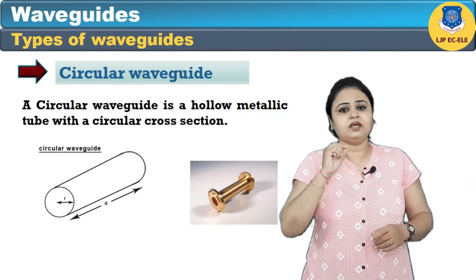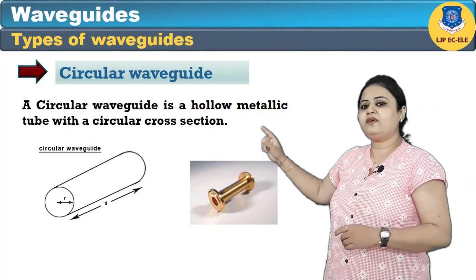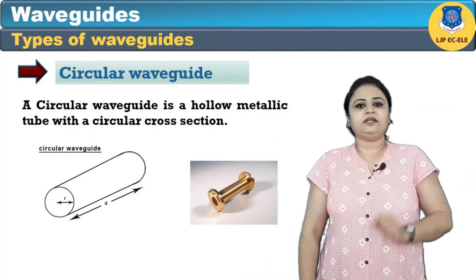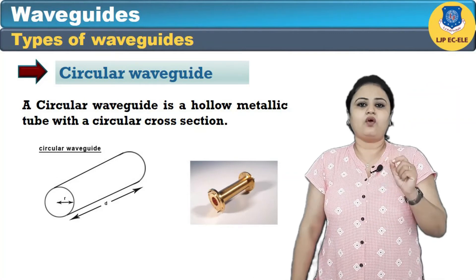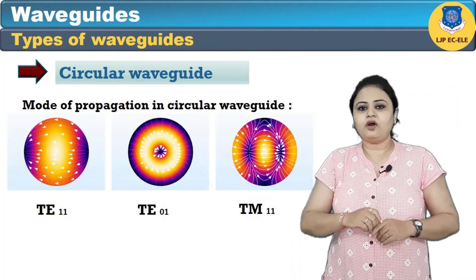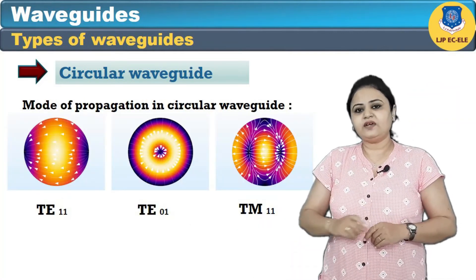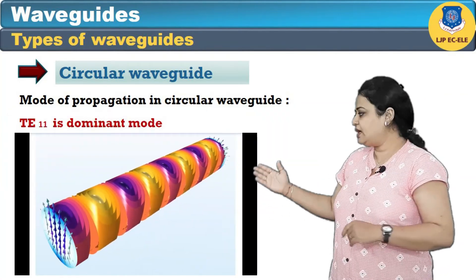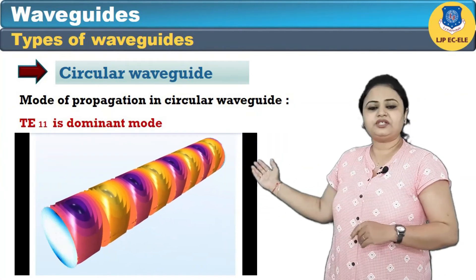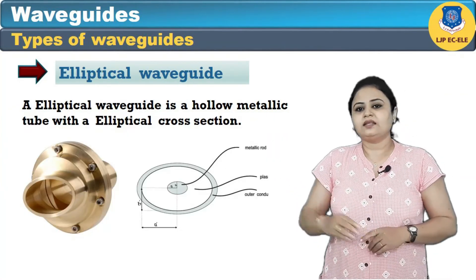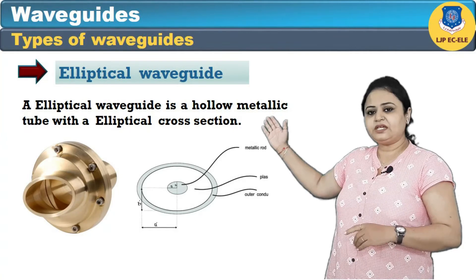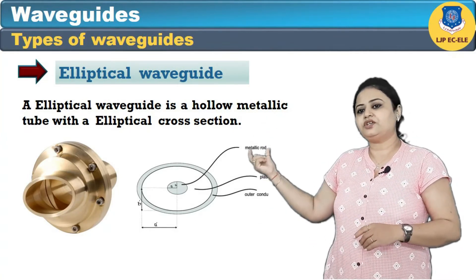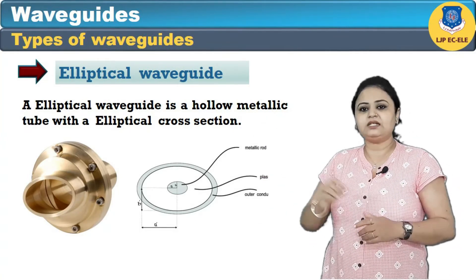Now we will see the circular waveguide, which has a circular cross section with radius a (or r). The dominant mode of the circular waveguide is TE11. Here you can see the simulation of the circular waveguide.